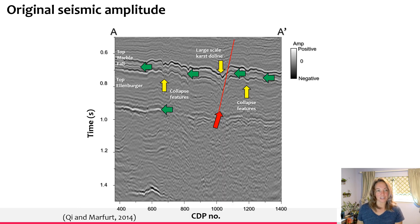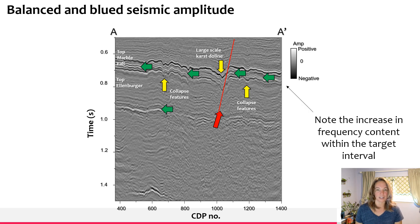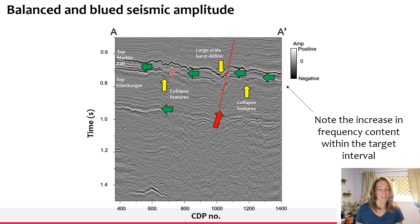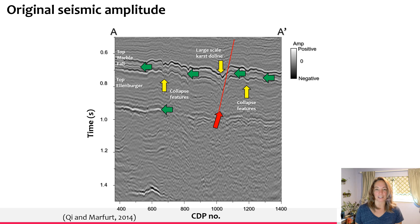Here is an example of some original seismic amplitude data before spectral balancing and then after spectral balancing. You can notice that we've got some increase in the frequency content up here in the Marble Falls formation. I'll go through it a couple more times so you can look really closely at what's going on with the spectral balancing.